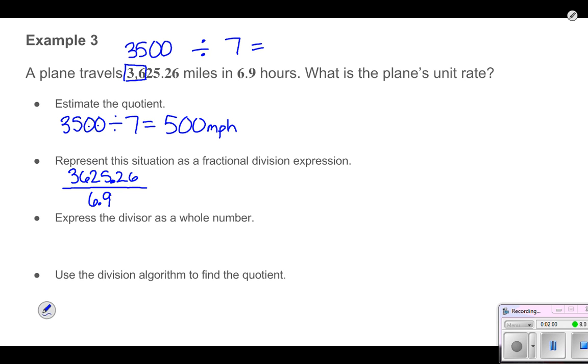The next part says express that divisor as a whole number. Right now my divisor is 6 and 9 tenths. We talked about different ways to change that into a whole number by multiplying by powers of 10. I can see here to change 6.9 into a whole number, I can multiply it by 10. So I'm going to have 69 now. And to make it equivalent, whatever I do to the bottom part of the fraction, I'm going to do to the top. Notice this one isn't a whole number. We're still going to have a decimal in the dividend, but we'll see how that still works anyway.